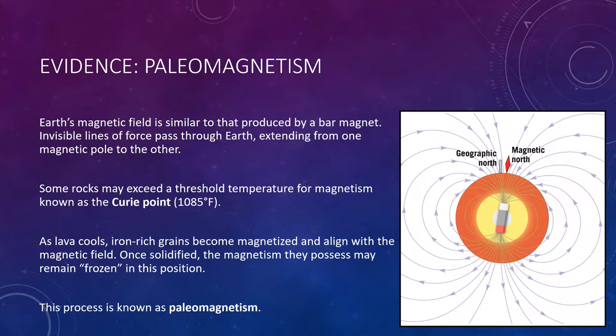Invisible lines of force pass through the planet and extend from one magnetic pole to the other. Earth's magnetic field is less obvious to us than the pole of gravity because we can't feel it; movement of a compass needle, however, confirms its presence. In addition, some naturally occurring minerals are magnetic and are influenced by Earth's magnetic field. One of the most common is the iron-rich mineral called magnetite, which is abundant in lava flows of basaltic composition.